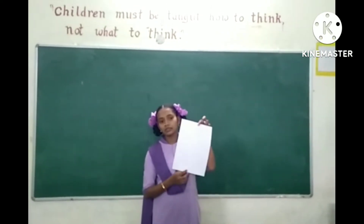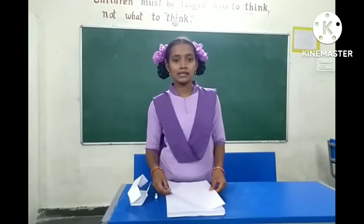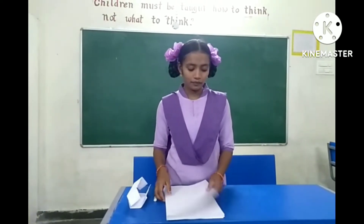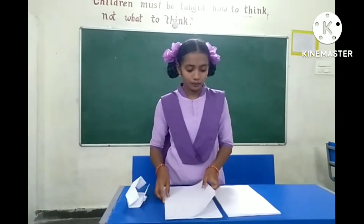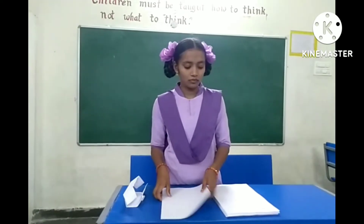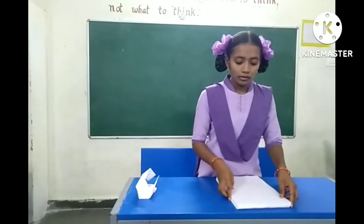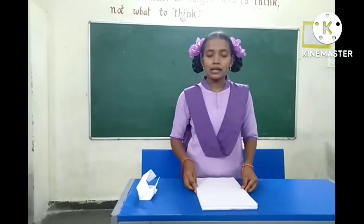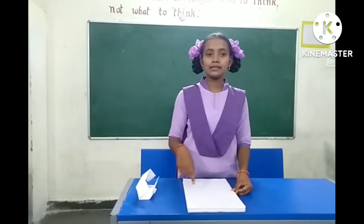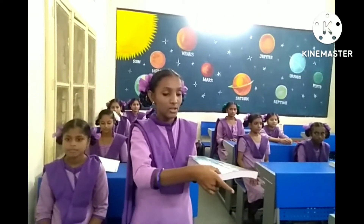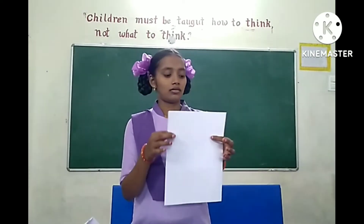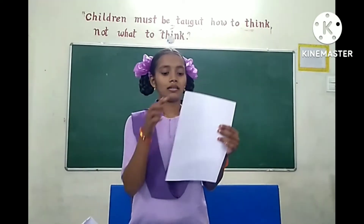What is the shape of this paper? It is a rectangular shape, which has two dimensions such as length and breadth. It is the 2D object. A 2D object has length and breadth.